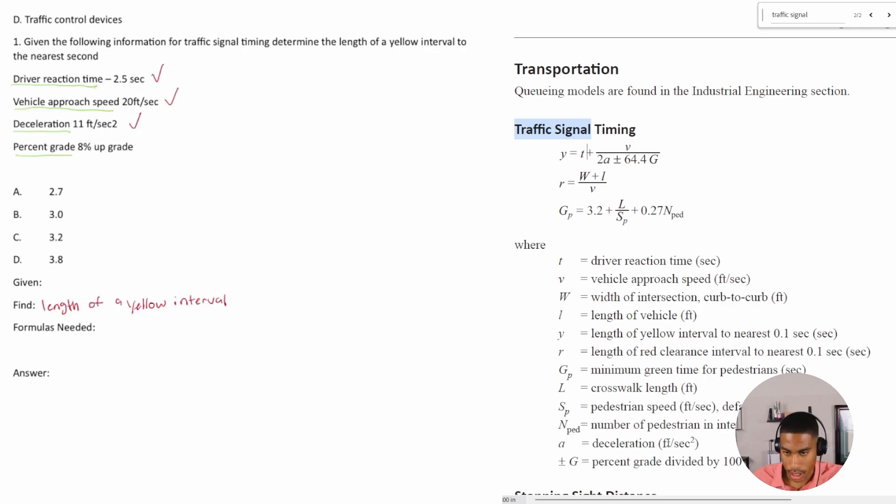And then do we have a g? g is the percent grade and it's plus or minus. So plus would be upgrade, minus would be downgrade. In our case it's going to be a plus because it is upgrade, a positive grade.